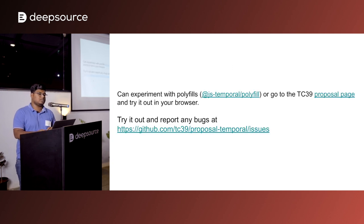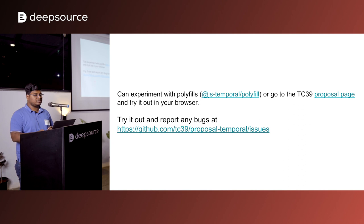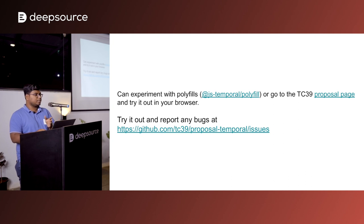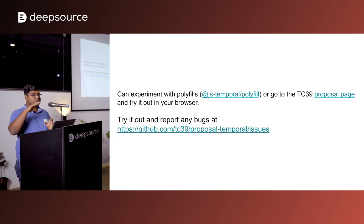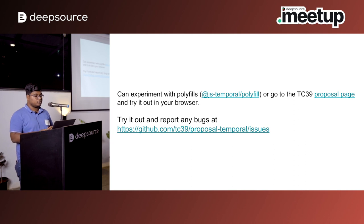The Temporal API is still at stage 3 and not ready for production use. However, polyfills are available — the most popular one is the js-temporal/polyfill package, which you can install and try out the Temporal API with. Alternatively, an easier way is to go to the TC39 ECMAScript proposal page — if you open DevTools there, it will load the entire Temporal API script, so you can start using these methods in your browser without doing anything. If you find any bugs, you can report them on the GitHub issue page.